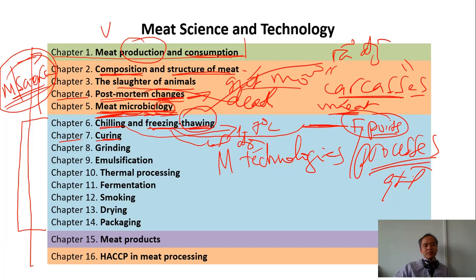Curing is the process where we add salt, nitrite, some herbs, sugar, and other components into meat. We call it marination, marinating, or curing of the meat. This process will help improve the taste, improve the flavor, but also improve the preservation. What is preservation? It's how long we can keep the product. We improve the preservation, the taste and flavor, sensorial quality, and so on. Chapter 8, we discuss grinding. What is the objective of grinding? To reduce the size, to make small meat particles.